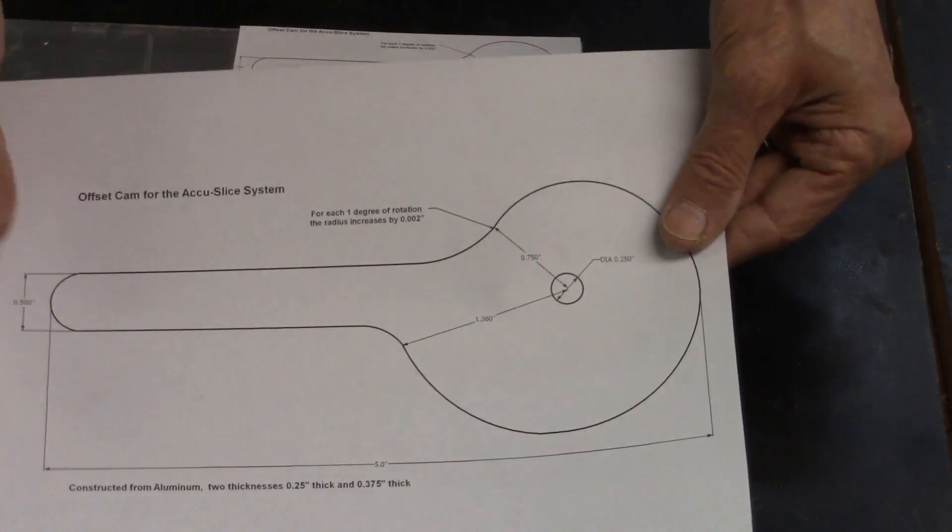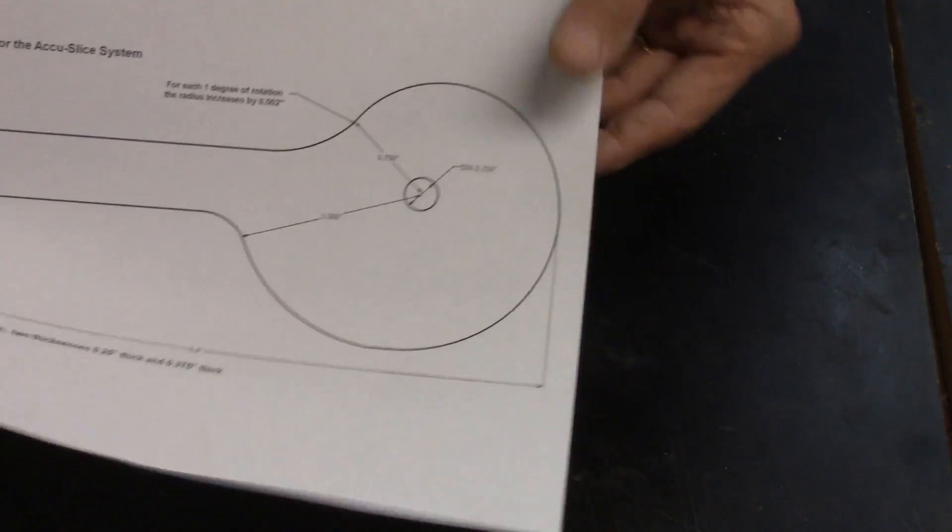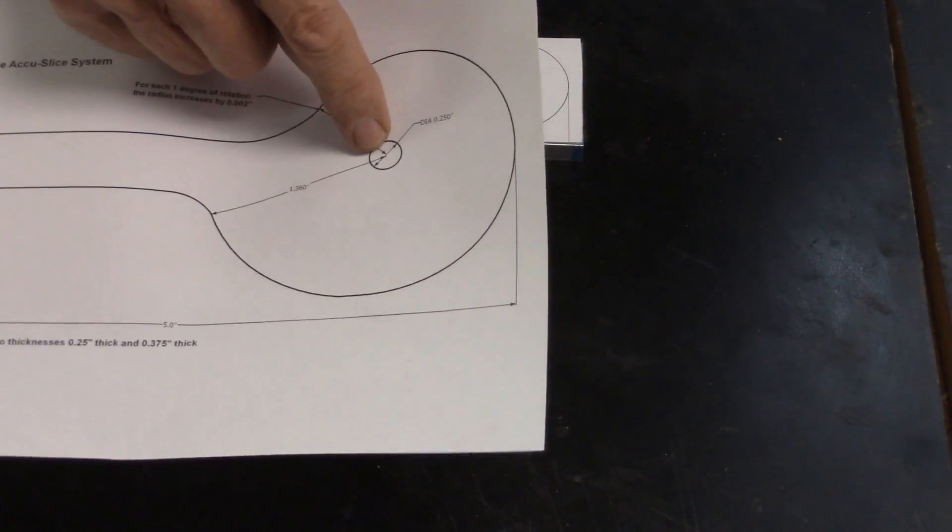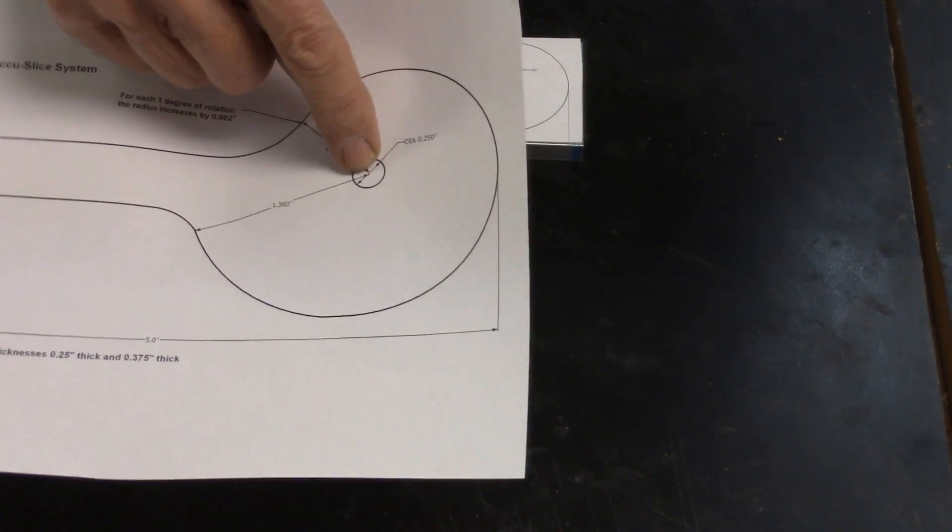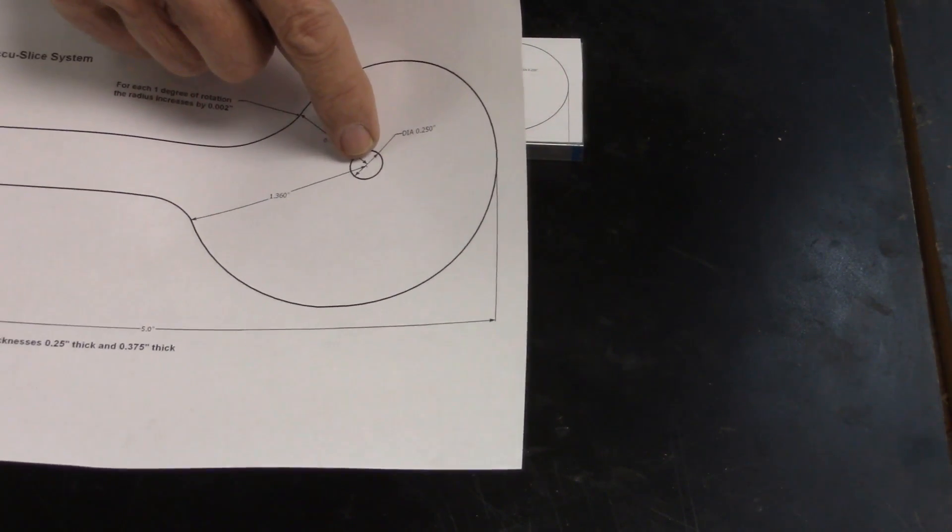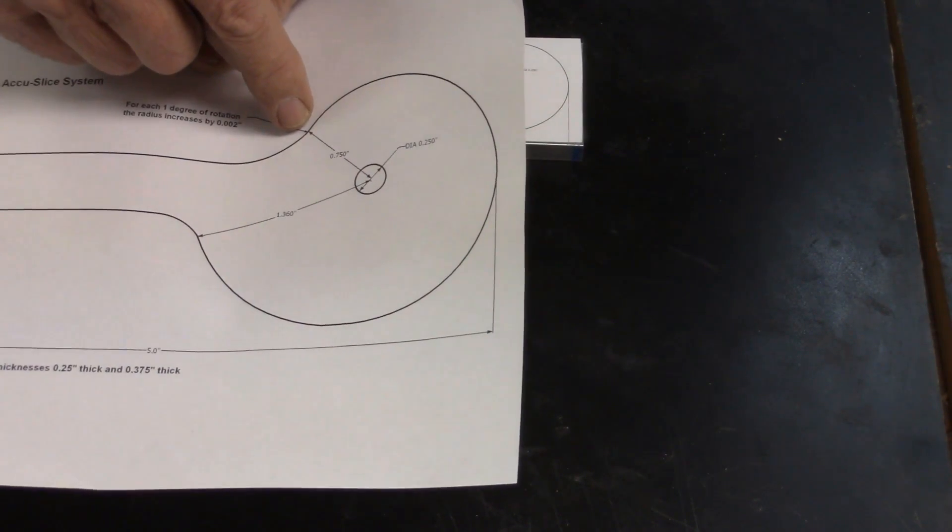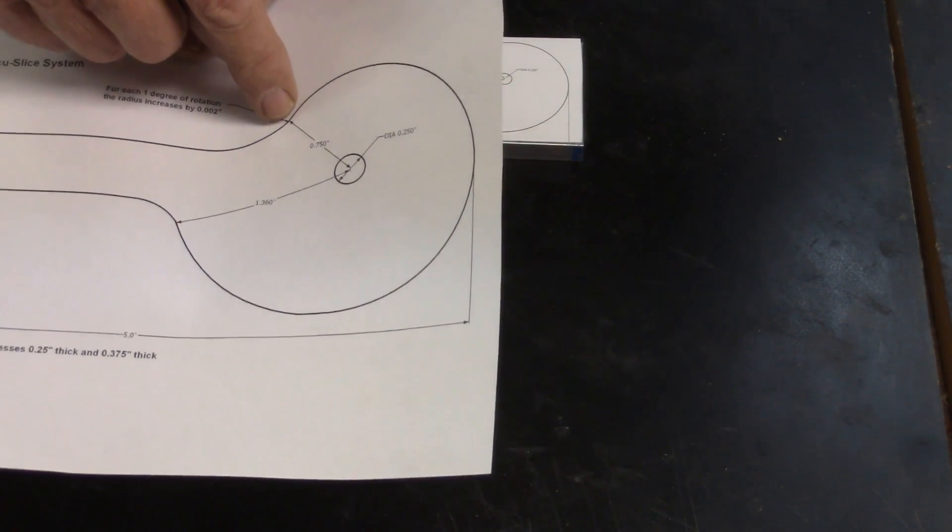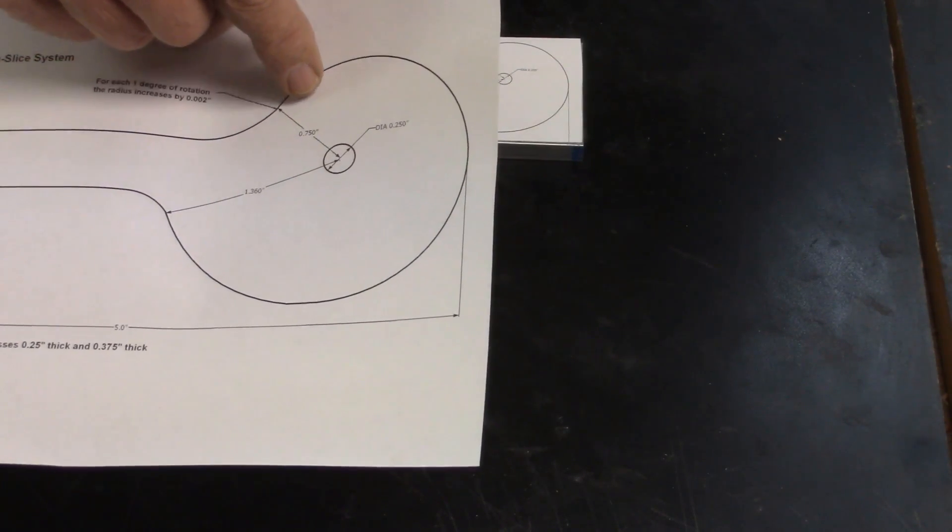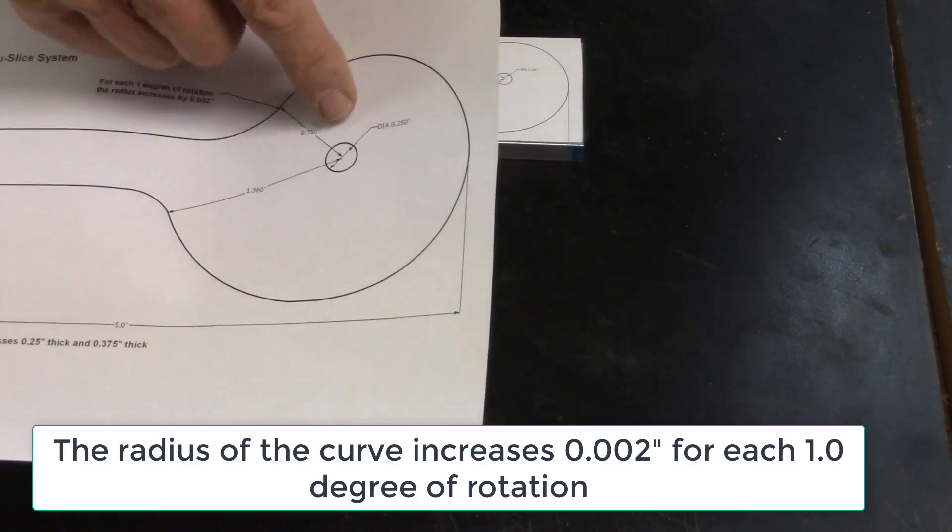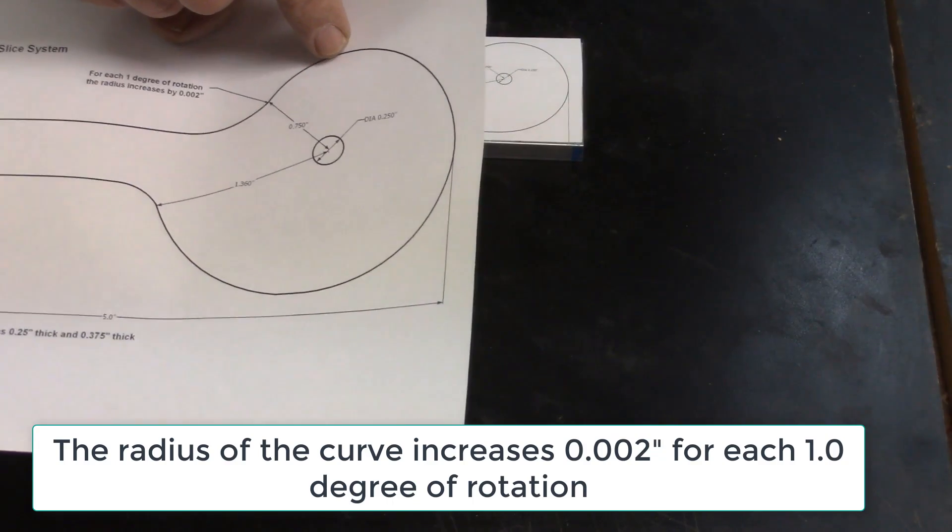The design of the offset cam is critical. I have a center point here on my cam, which is a quarter-inch drill-through hole. Starting at the closest point, the distance from the center of the hole to the outer edge is three-quarters of an inch. And then for every one degree of revolution, the radius increases two-thousandths of an inch.